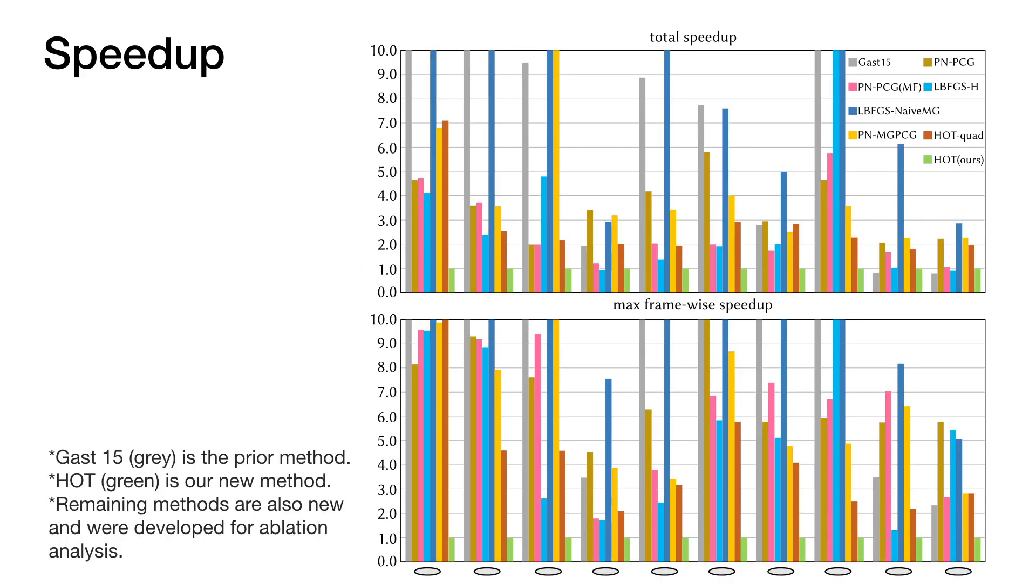Here at the top, we summarize method timings for all benchmark examples, measuring the total runtime of each method normalized with respect to the timing of the HOT algorithm over each simulation sequence, and so determine HOT's speedup. At the bottom, we comparably report the normalized maximum frame-wise timing of each method with respect to HOT across all benchmark examples, and so again determine per-frame max speedup of HOT.